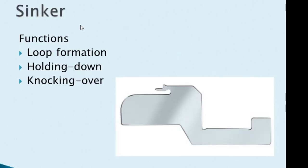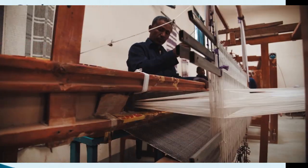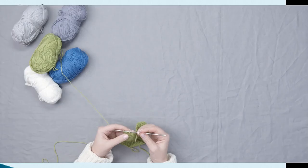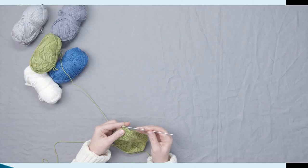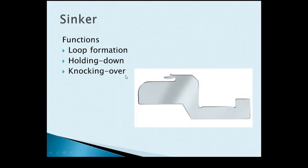The sinker is positioned at 90 degrees to the needle for fabric production. When forming a loop, the sinker loop and the needle loop together produce the knitted fabric, as both are part of the same loop structure.